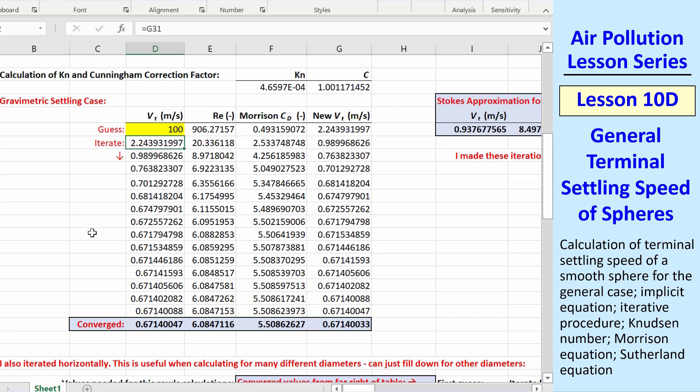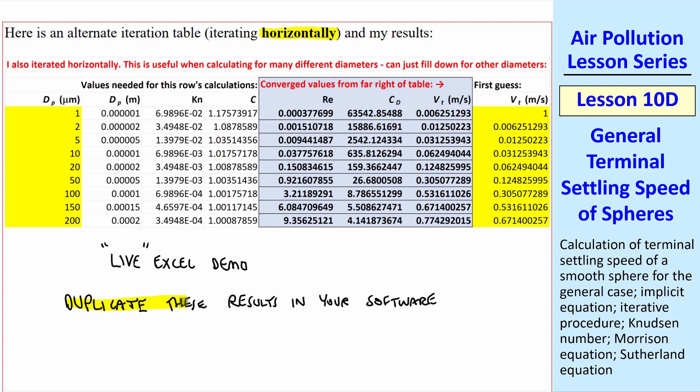In numerical parlance, we say that this technique is very robust. I strongly urge you to duplicate these results in your software. Use my same particle diameters, and make sure that you get my same results, at least to five digits or so.